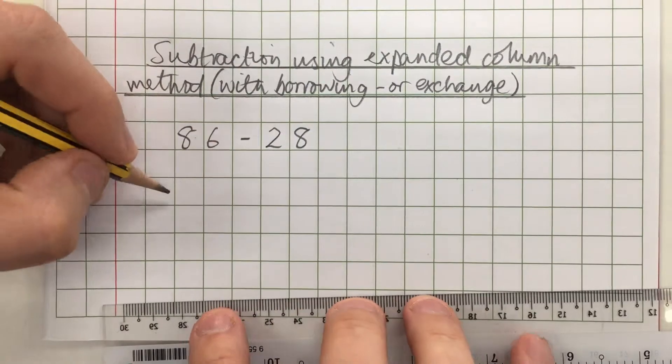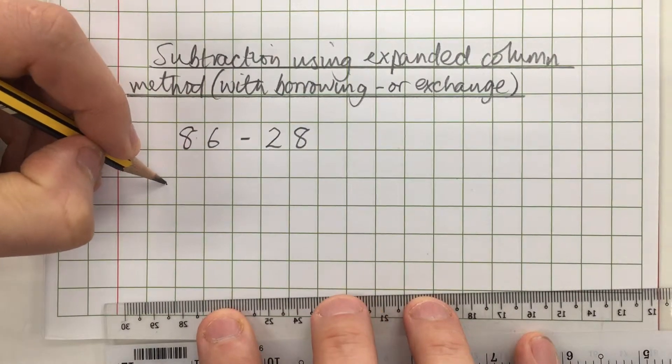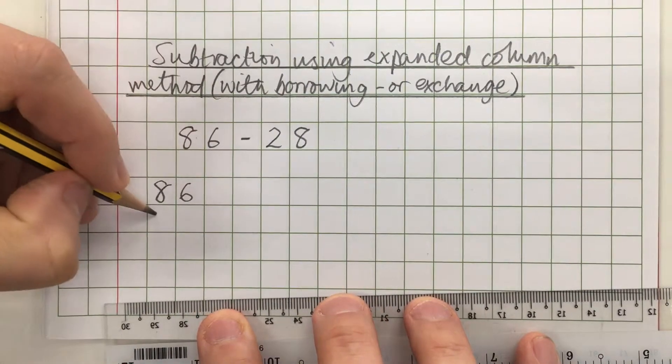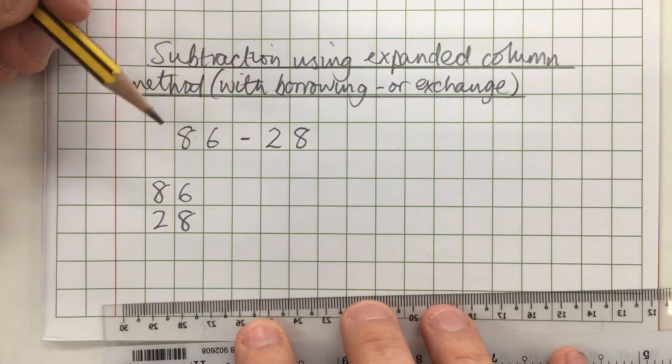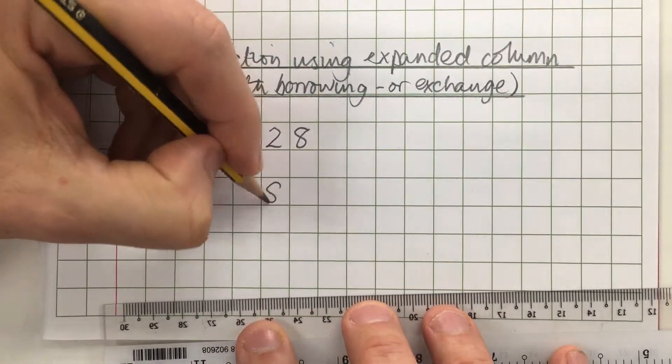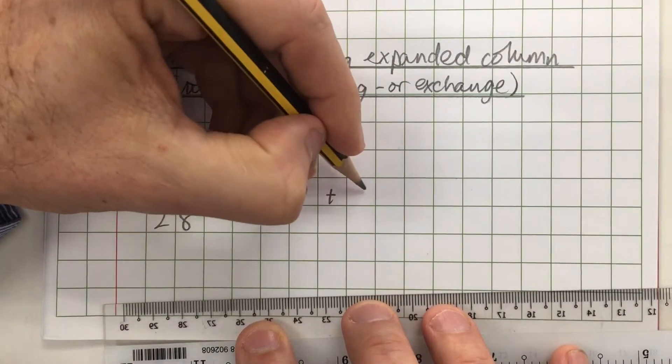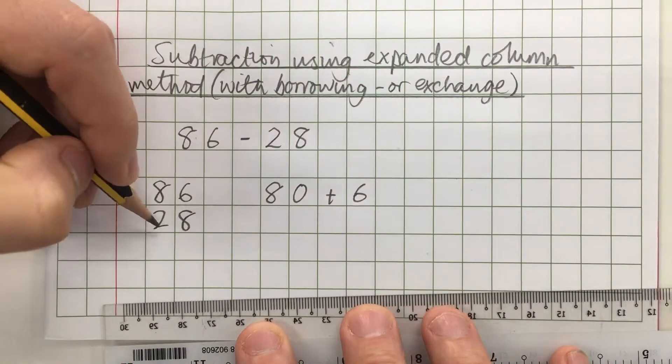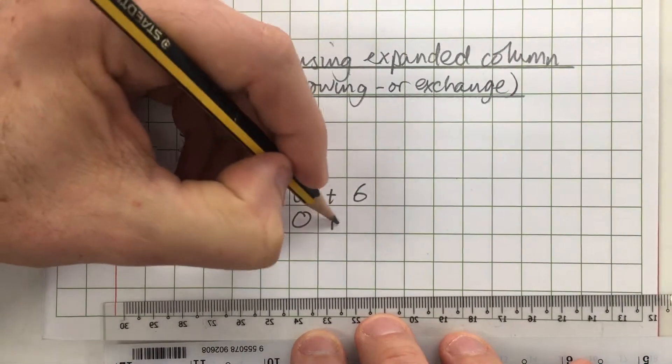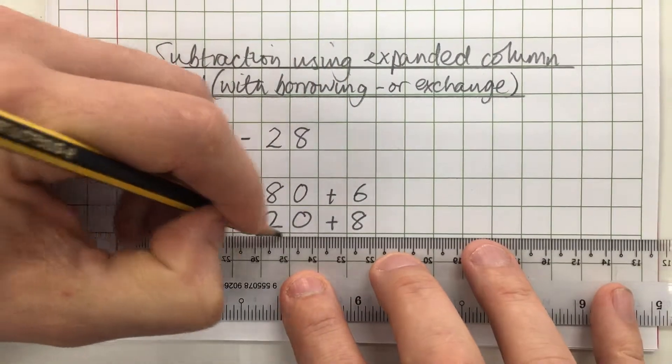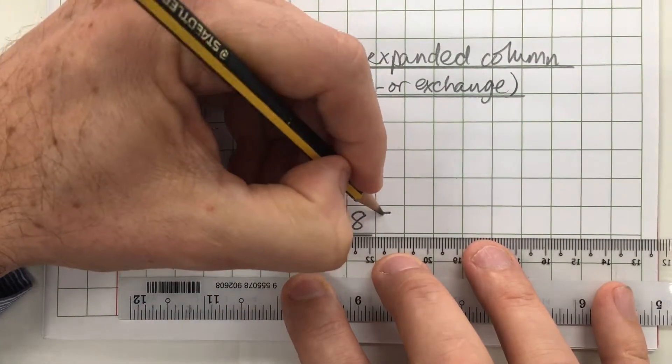So to start with, I'm going to write my numbers one on top of the other. I'm going to partition my 86 into 80 and 6, and I'm going to partition my 28 into 20 and 8. Draw a line underneath.